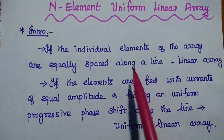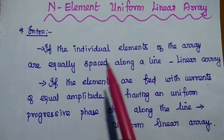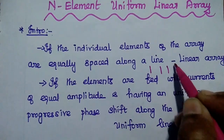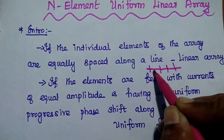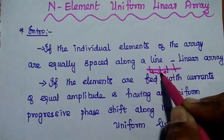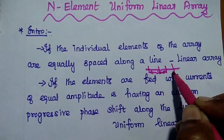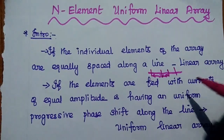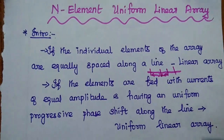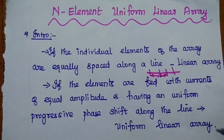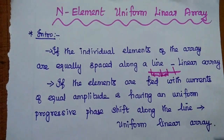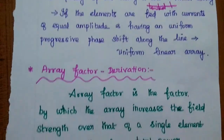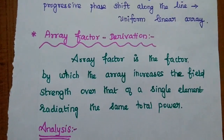To recap: in a group of similar elements, all are equally spaced. Equally spaced means all elements in the group have equal space between them — that is called a linear array. If each element is fed with currents of equal amplitude, that is called a uniform linear array. Next, we are going to derive the array factor for this N-element uniform linear array.